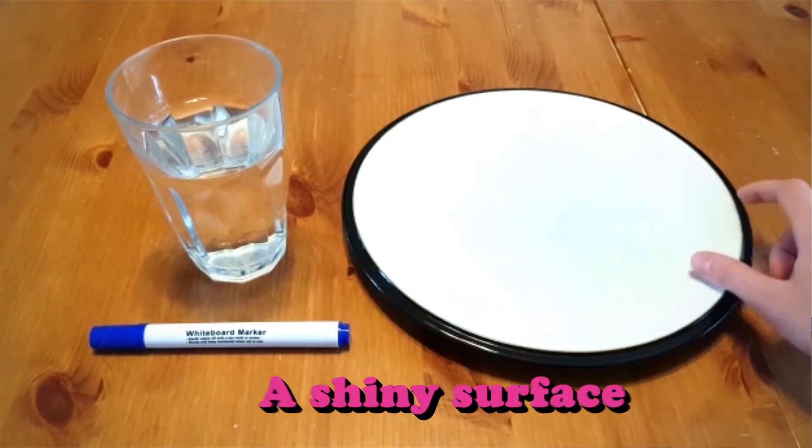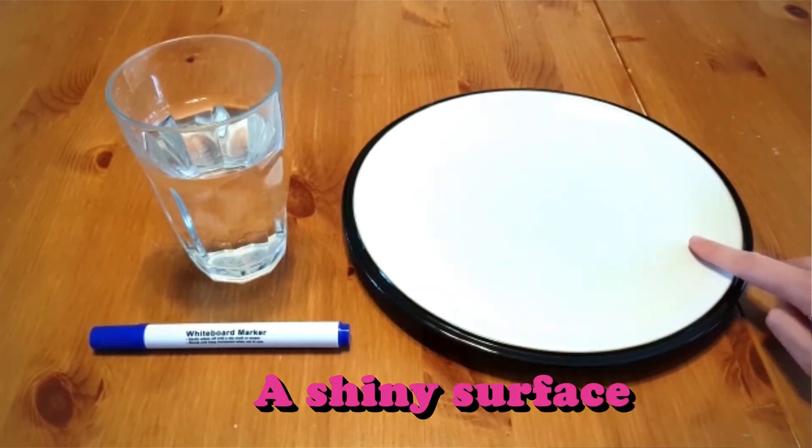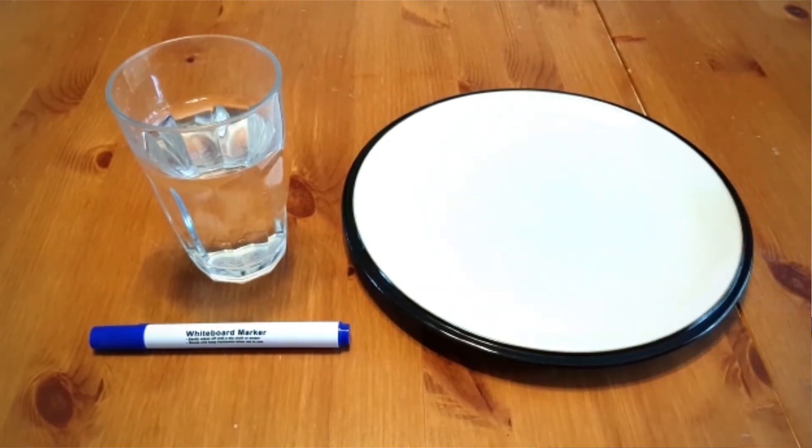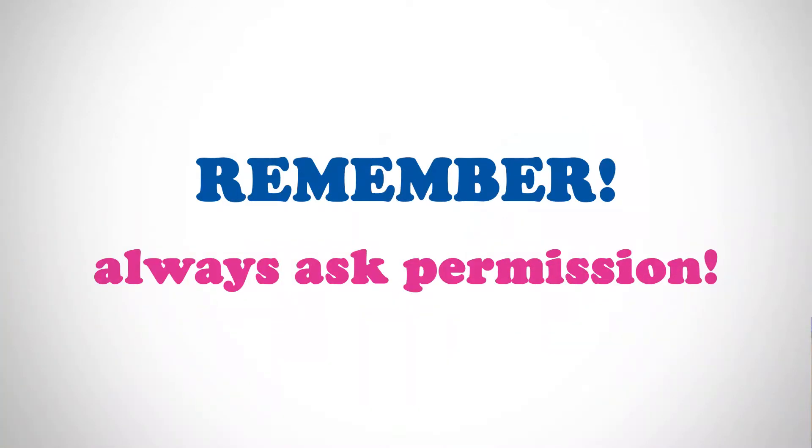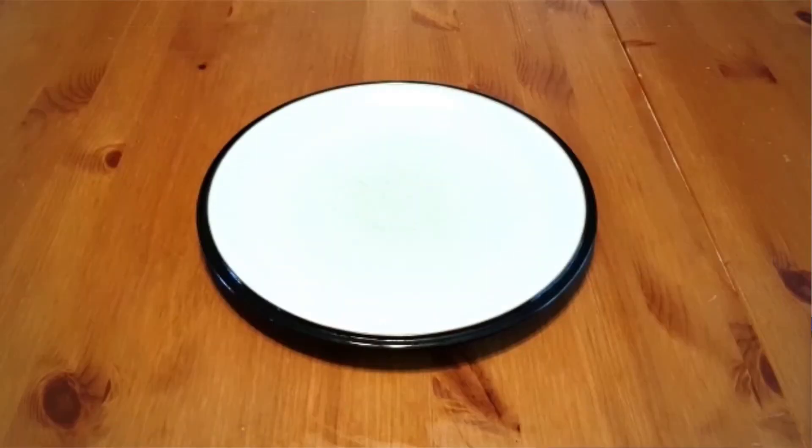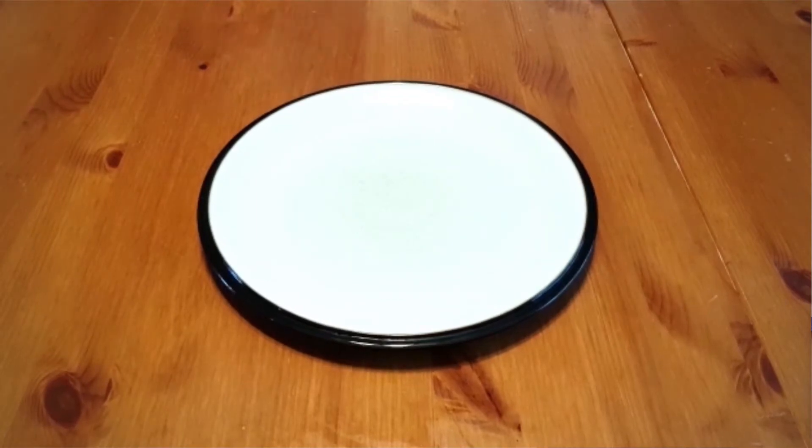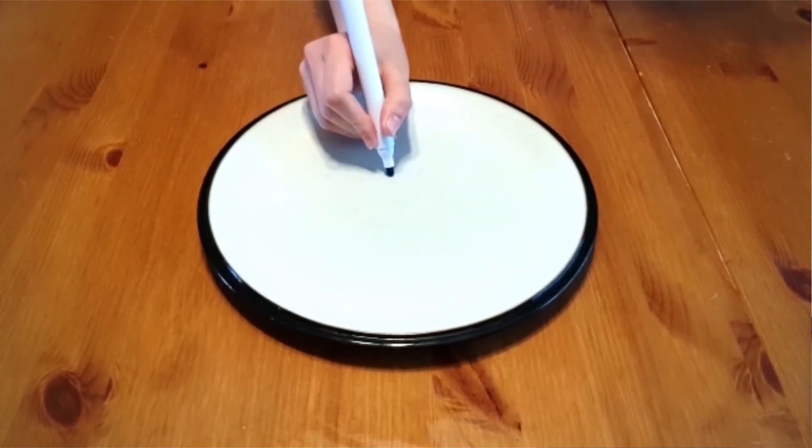Some water and a shiny surface. I'm using a ceramic plate but glass also works well. Make sure you ask your parents permission before using their best china. So you want to draw your stick man with your whiteboard marker.